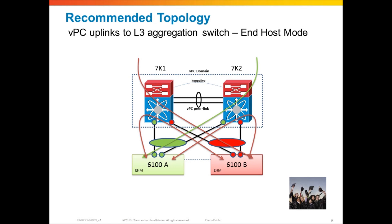This is an ideal configuration for scaling bandwidth. None of this traffic is traversing the peer link - the peer link in a VPC Nexus 7000 setup is really just there for state synchronization and control plane functions. All inter-fabric traffic between 6100A and 6100B, and all traffic from the network to UCS, is handled locally by each Nexus 7000. The recommended topology is attaching your UCS fabric interconnects upstream with VPC port channels to a VPC domain, such as you can build with the Nexus 7000, giving you ideal traffic management, better failure handling, and hardware-driven failure events from VPC and port channels.